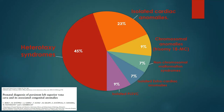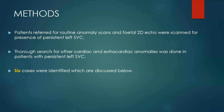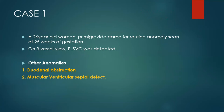Chromosomal anomalies were the third most common association. All second trimester ANC patients who were referred for anomaly scan and fetal echocardiography were searched for PLSVC and associated anomalies. Six such cases were identified, which are discussed below.